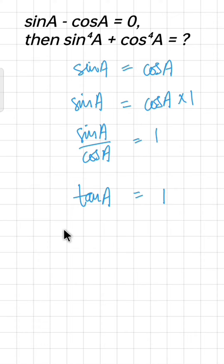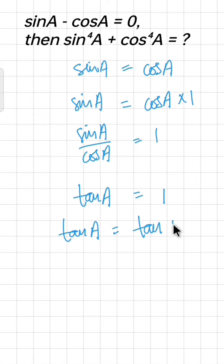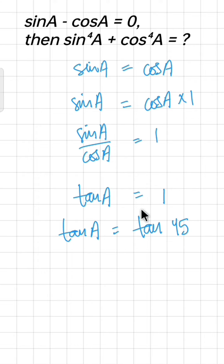So tan(a) equals 1. Now, tan of which angle equals 1? Looking at the table — tan 30°, tan 45°, tan 60°, tan 90° — tan 45° equals 1. So we can replace a with 45°, because tan 45° has value 1.